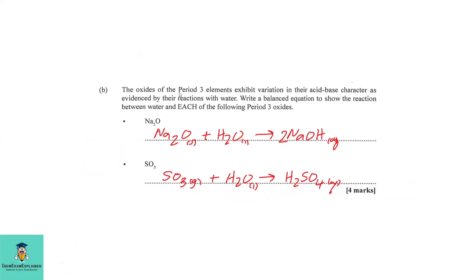3b. The oxides of period 3 elements exhibit variation in their acid-base character as evidenced by their reaction with water. Write a balanced equation to show the reaction between water and each of the following period 3 oxides. The first one is sodium oxide with water. So we write Na2O solid plus H2O to produce NaOH. For SO3, which is sulfur trioxide, we write SO3 gas plus H2O liquid to produce H2SO4, which is sulfuric acid.